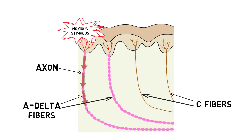The A-delta fibers are responsible for fast, sharp pain, which might occur at the time of an injury. The C-fibers convey slow, dull pain, which often follows the initial pain of the injury.